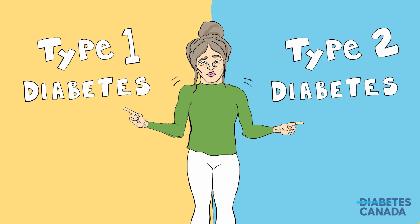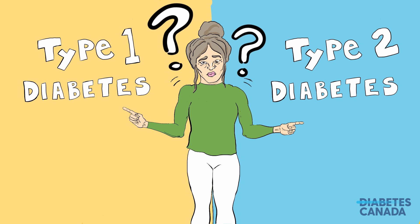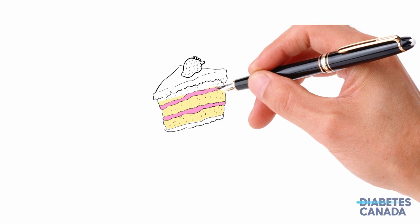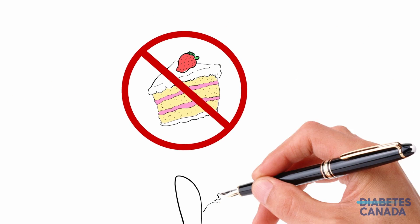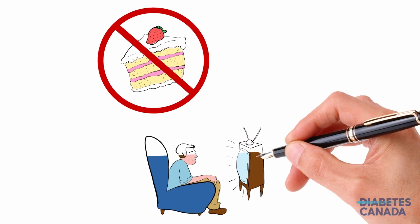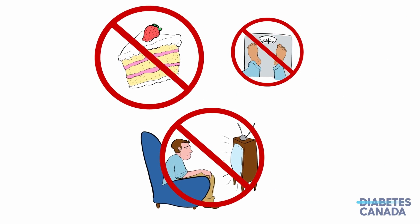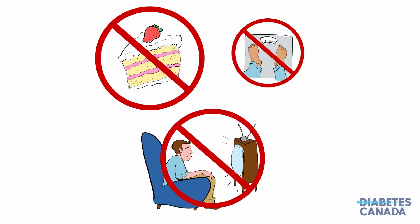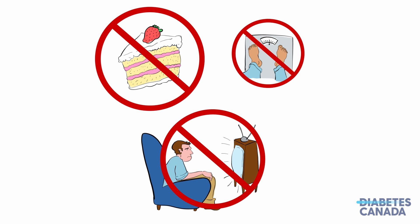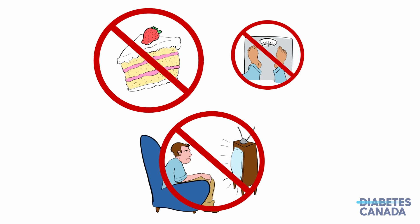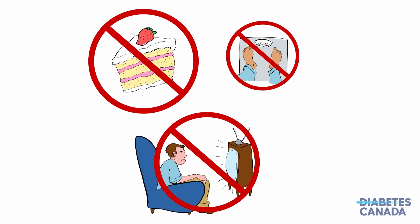Now that you know what diabetes is and how it affects people, you may be wondering what causes this condition in the first place. First, let's discuss what diabetes is not caused by. It is not caused by eating too much sugar. It is not caused by a lack of exercise. It is not caused by being overweight. Nobody gives themselves or a loved one diabetes, and broadly speaking, there is no single event, behavior, or occurrence that causes diabetes.